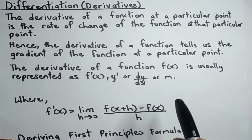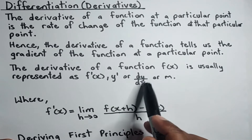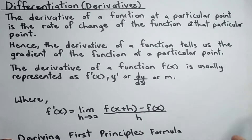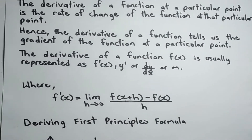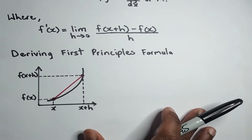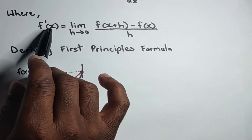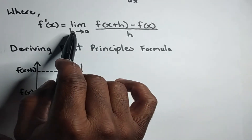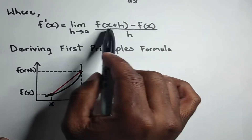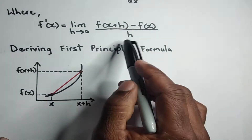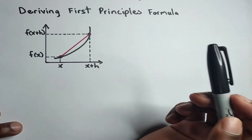If you watched the power rule video I created probably a week ago, you saw me representing the derivative as dy by dx. Now for the first principle, we normally use f prime of x. So this is the first principle formula: f prime of x, which is the gradient, is equal to the limit when h approaches 0 of f of x plus h minus f of x, all over h. You might be wondering where this comes from, so let's look at how to derive the first principles formula.